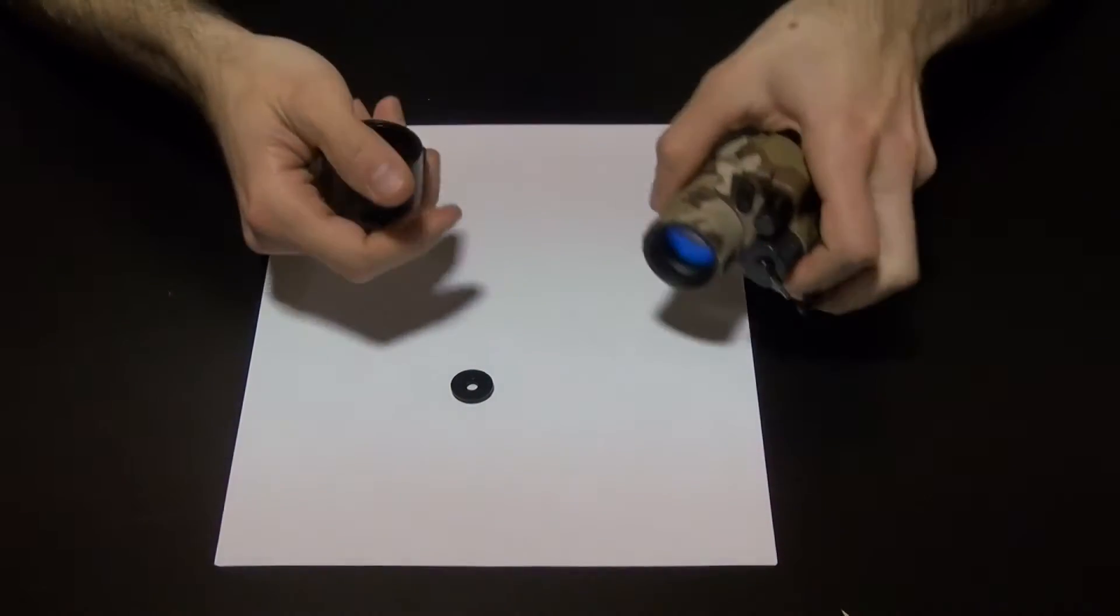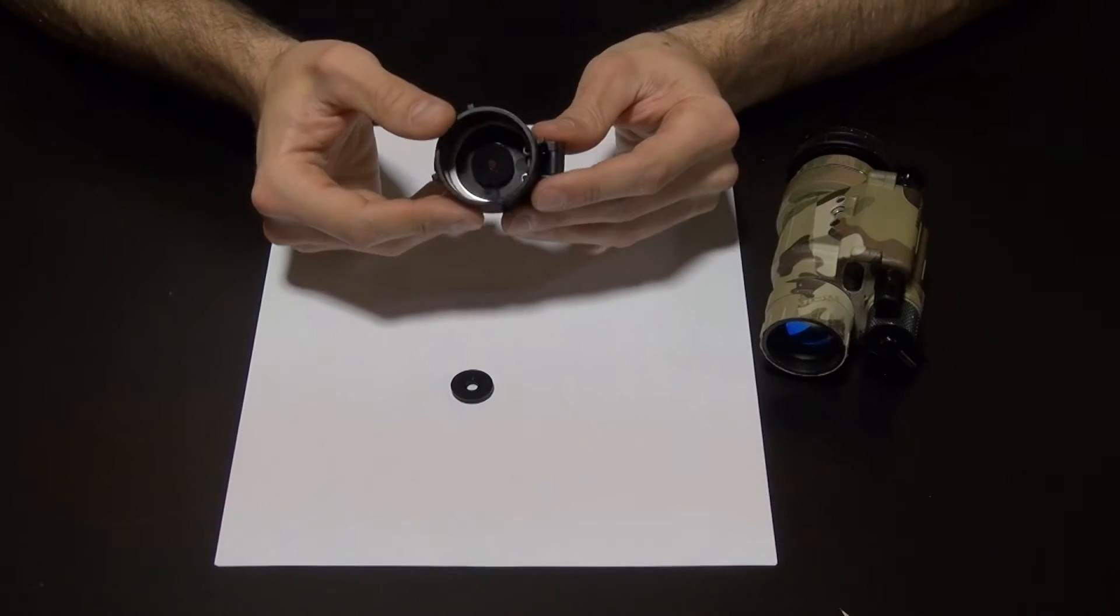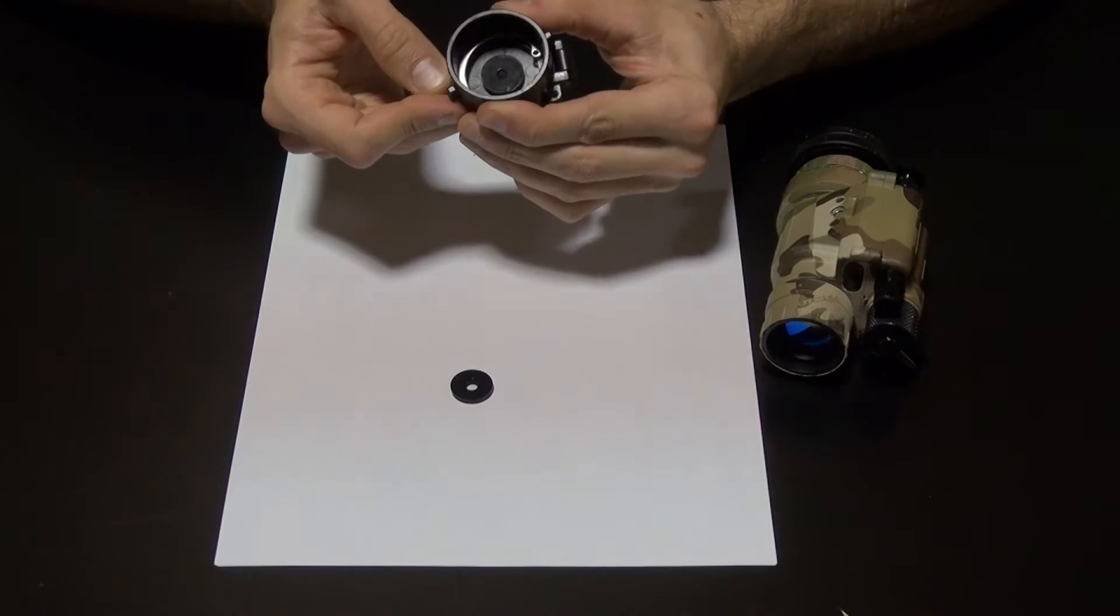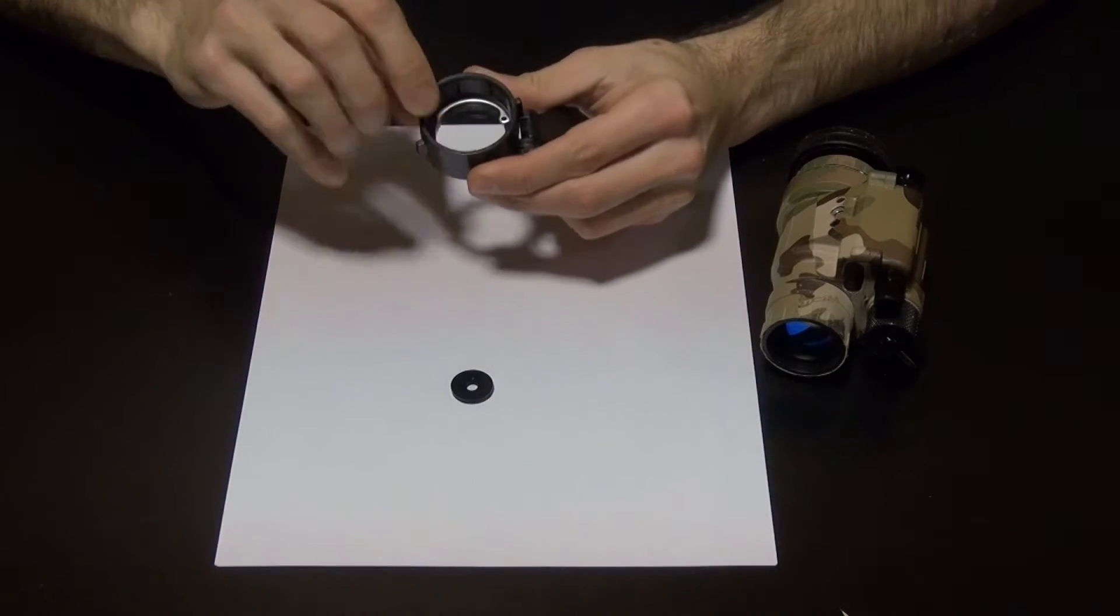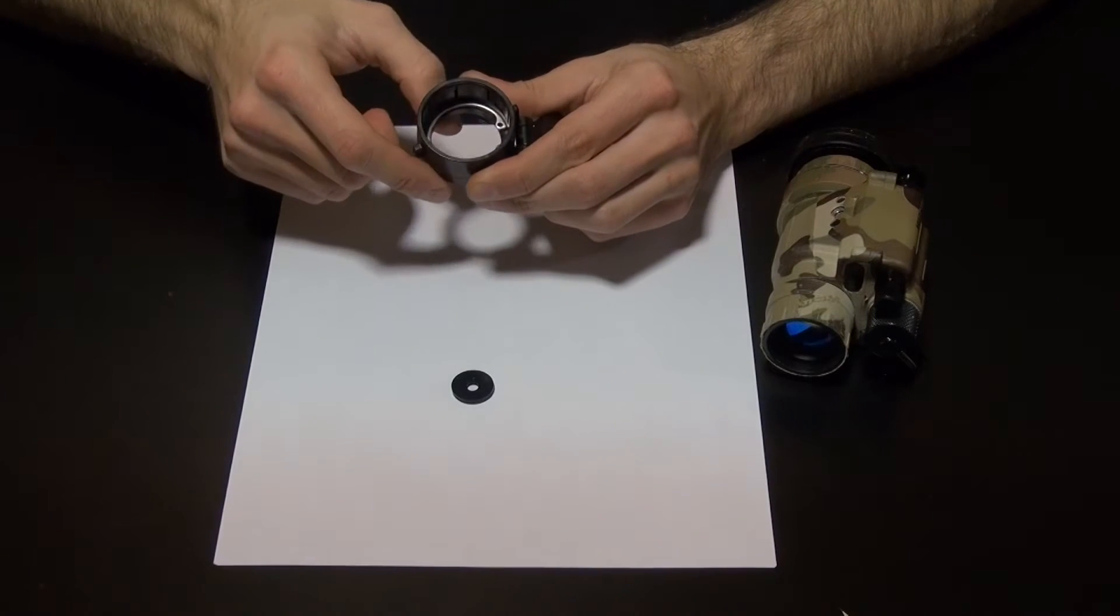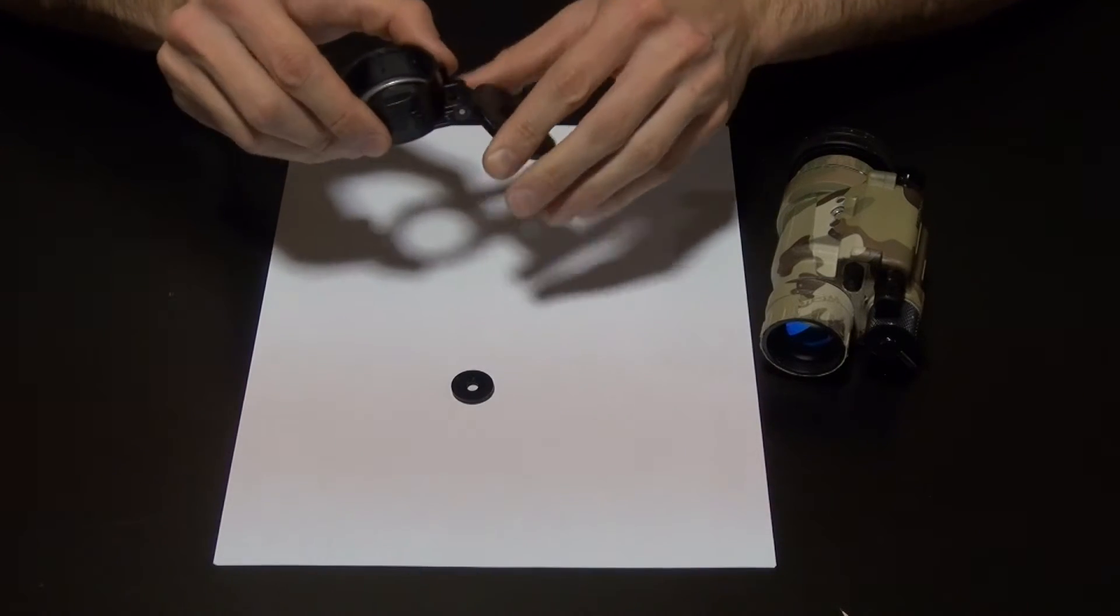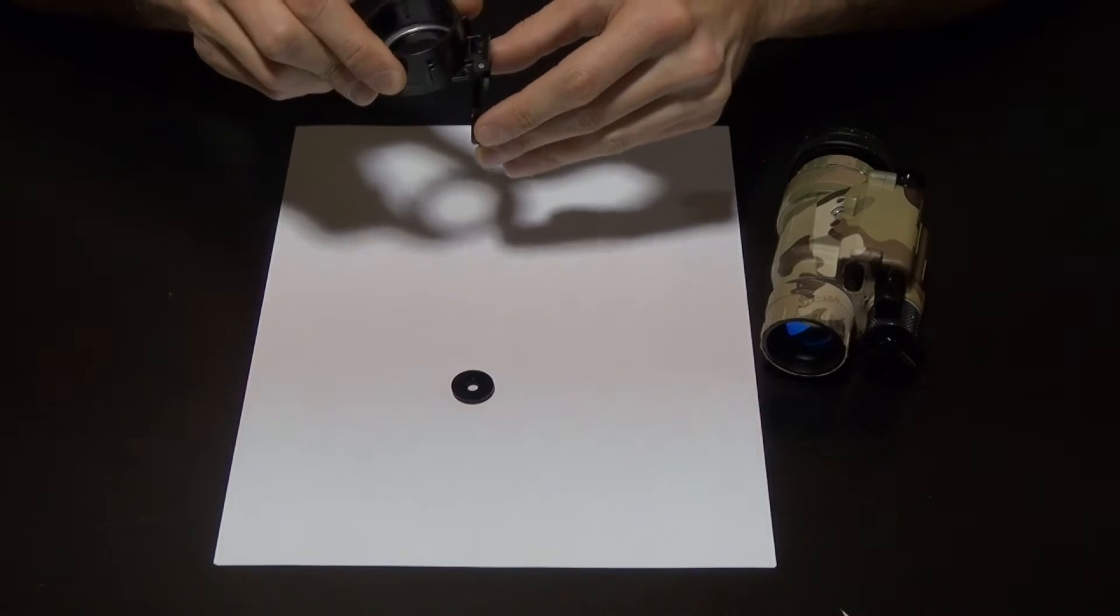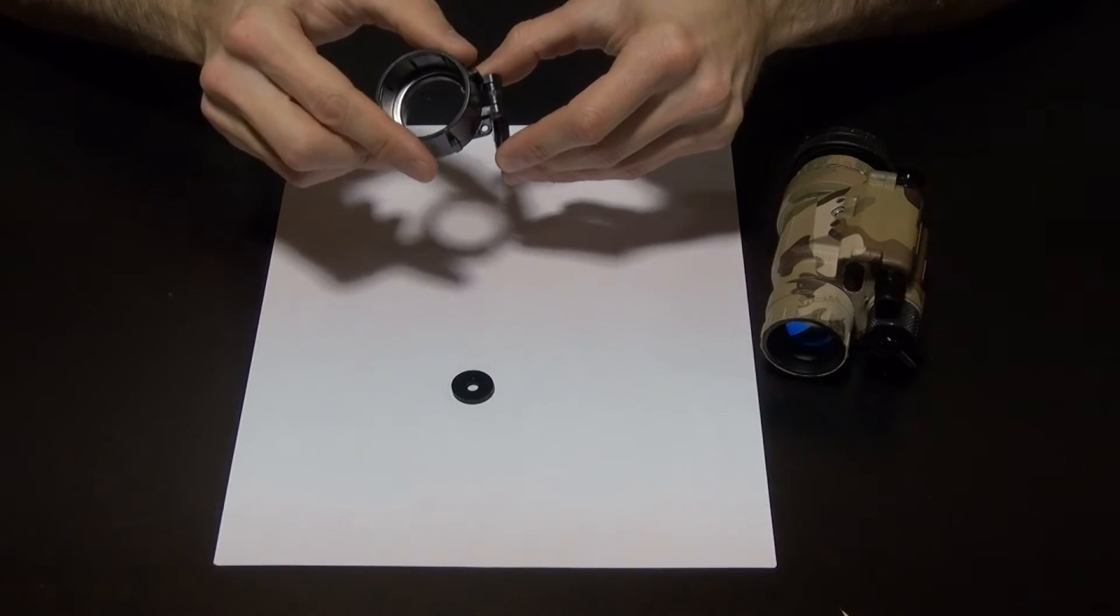When you pull it off, you can see the little snap ring on the inside. This ring can be removed, allowing you to replace the sacrificial window, so you can leave the Hoplite attached to your goggle at all times.